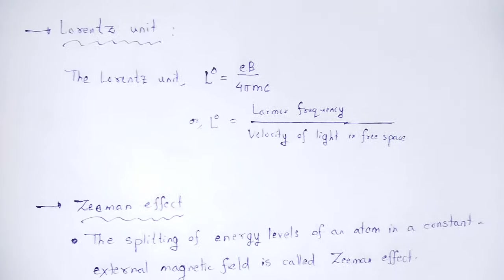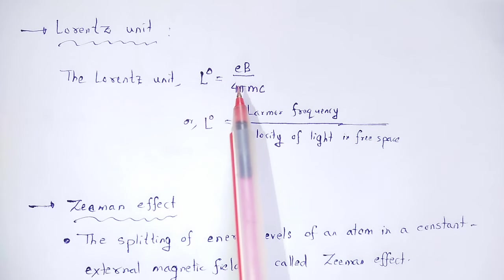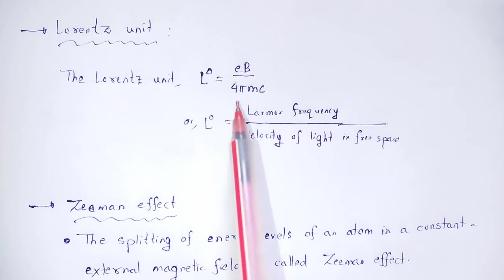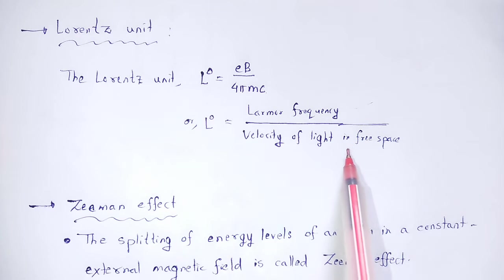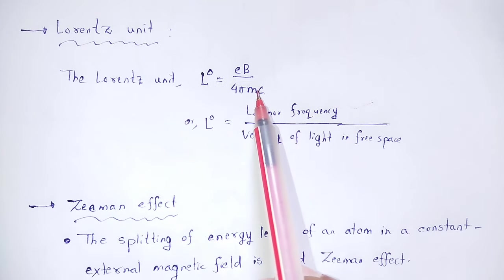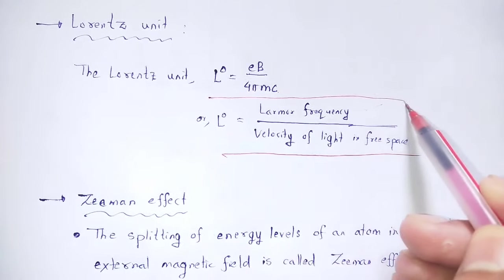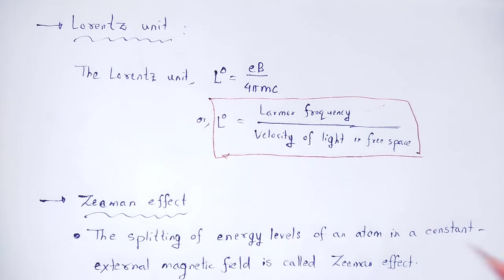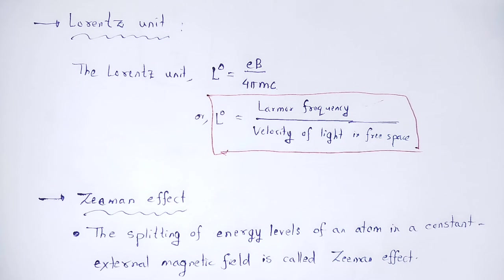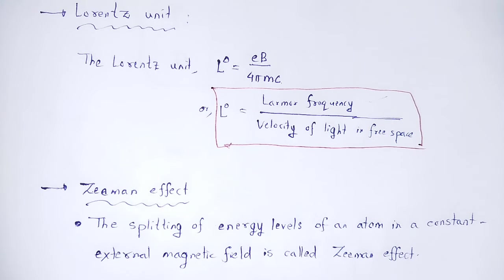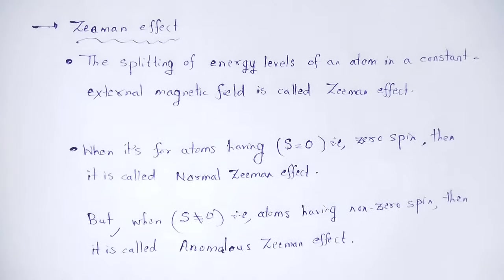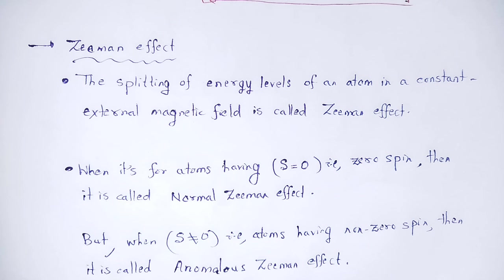Next: Lorentz unit. The Lorentz unit L0 equals eB divided by 4πmc. This is the Larmor frequency divided by the velocity of light in space. The Larmor frequency is eB divided by 4πm, and the Lorentz unit is this Larmor frequency divided by the velocity of light.